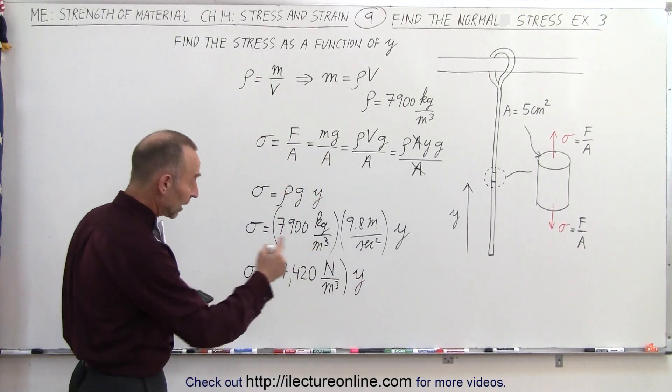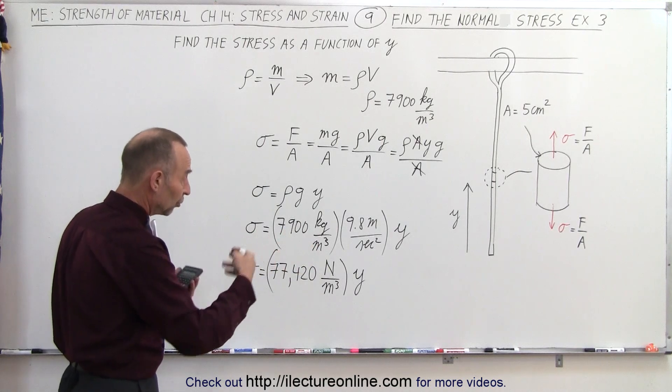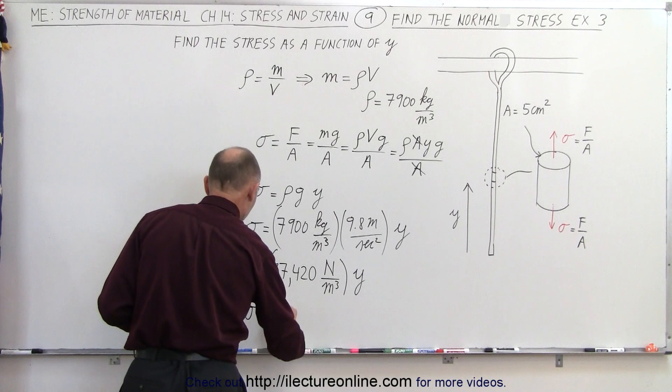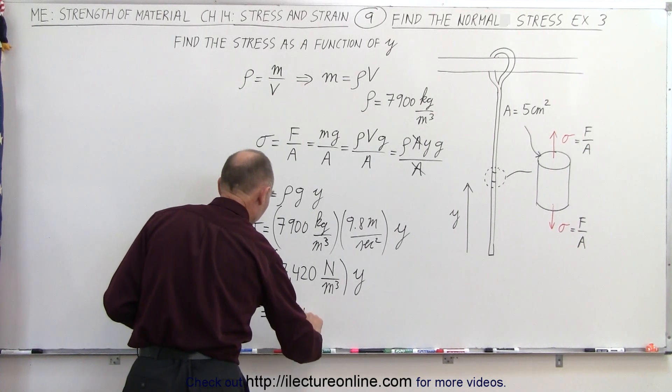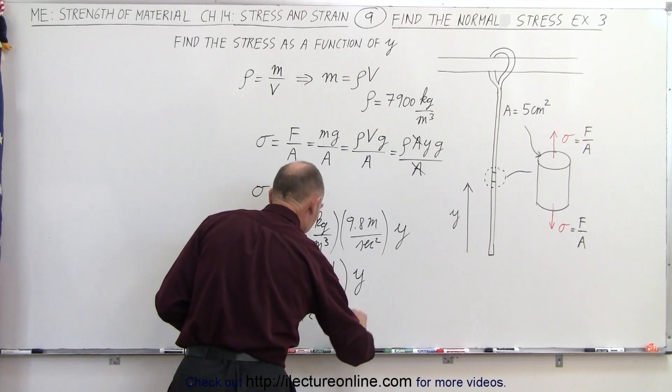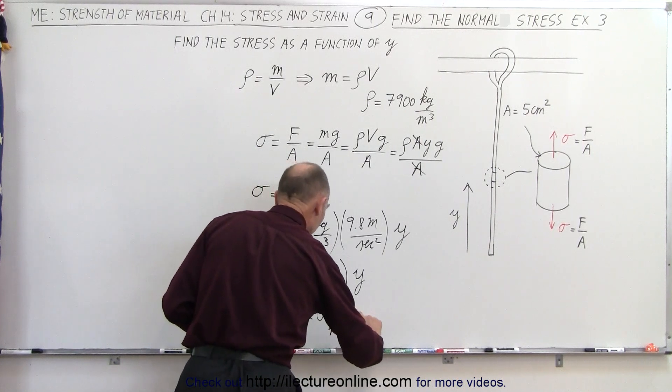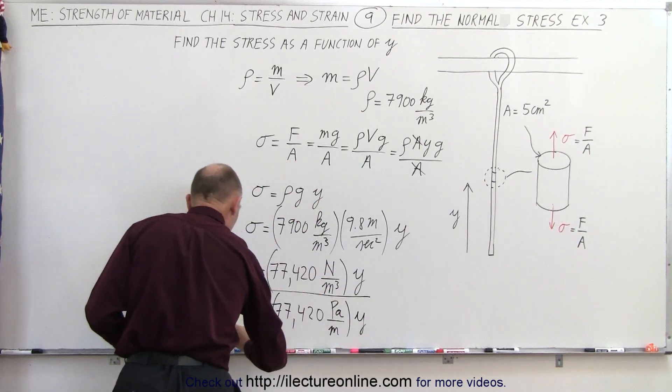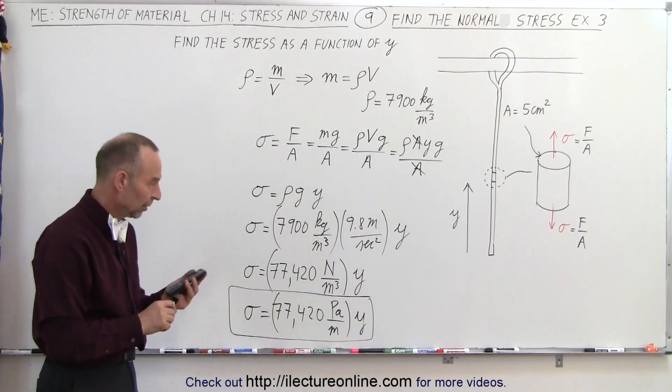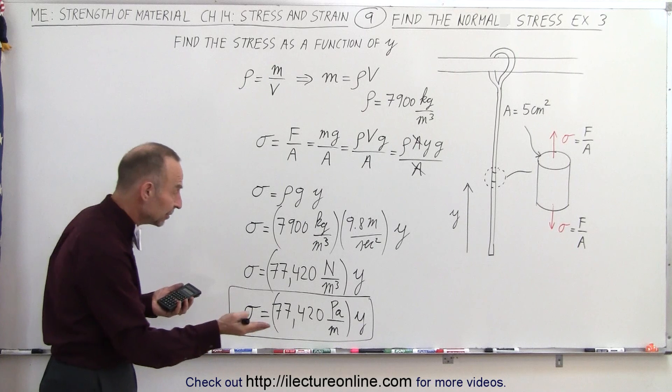Since y is in meters, when you cancel meters with meters cubed, you get newtons per meter squared, which is pascals. We can write σ = 77,420 pascals per meter times y, where y is any position from the bottom of the cable on up. For every meter you go up, the stress increases by 77,420 pascals.